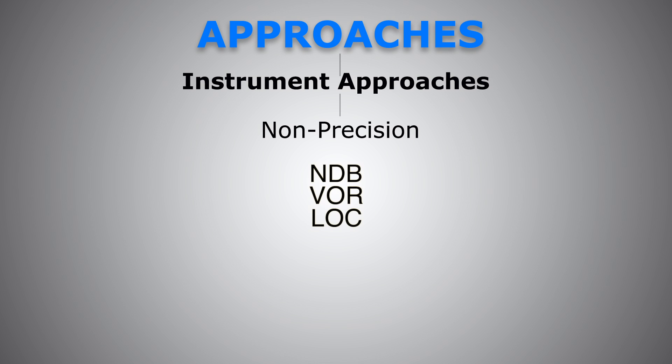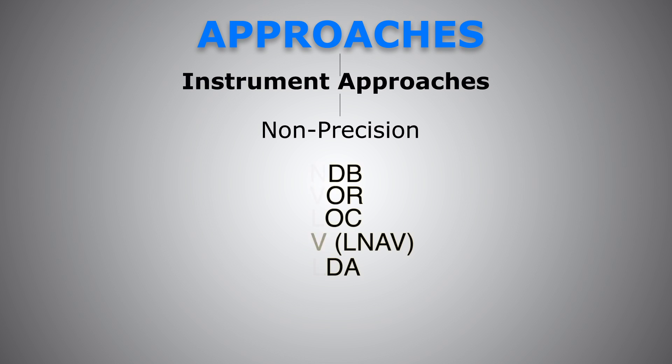We also have RNAV approaches, like LNAV — lateral navigation only. And we also have LDA, Localizer Directional Aid, which is a localizer signal that is offset by between 6 to 12 degrees from the runway centerline.